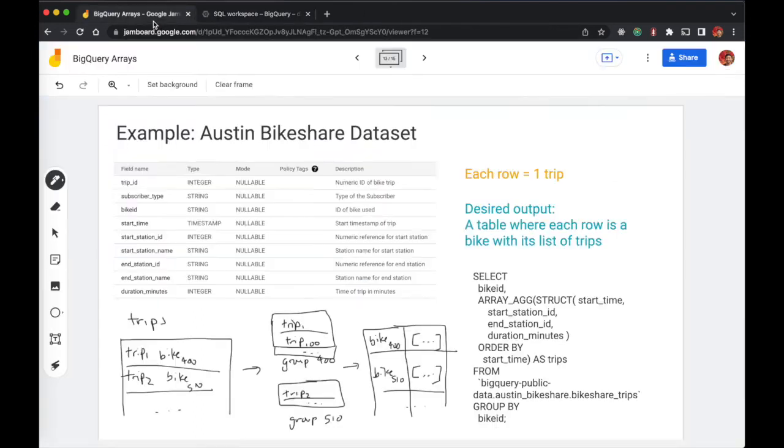So going back to our Jamboard, what is going on visually? Well, from the original trips table, we're grouping by bike ID such that there is one trip per row for each bike. And then we aggregate each individual trip into an array.